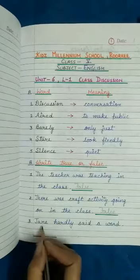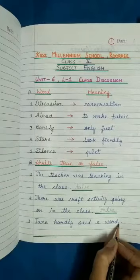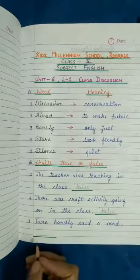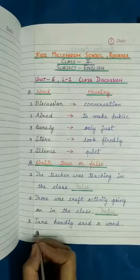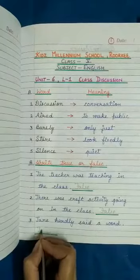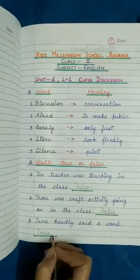Third: Jane hardly said a word — Jane ne bahut mushkil se kuch kaha hoga, means shayad hi kuch kaha hoga. Ye statement sahi hai. In the blank we write True: T, R, U, E — True.